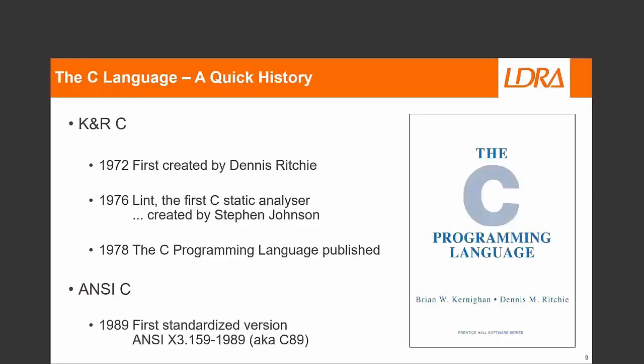As many of you will know, C was first created way back in 1972 by Dennis Ritchie at Bell Labs, and it was written with the Unix operating system in mind. Only four years later, Stephen Johnson, also at Bell, produced Lint — the first C static analyzer — because even then it was accepted that the C language had a lot of problems.